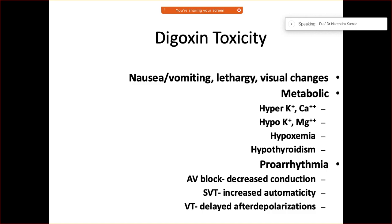Toxicity symptoms of digoxin include nausea, vomiting, and lethargy. Visual changes may occur. On the metabolic picture — for example on an ABG — hyperkalemia, hypercalcemia, hypokalemia, or hypermagnesemia can be seen.